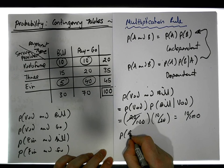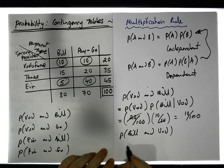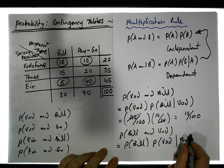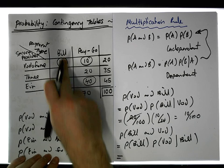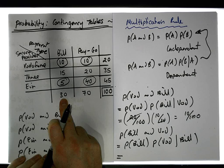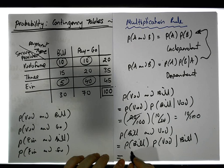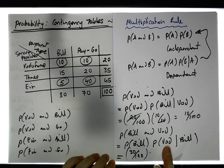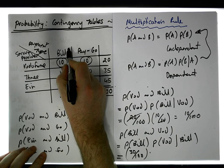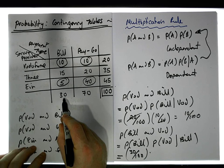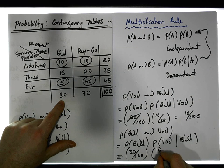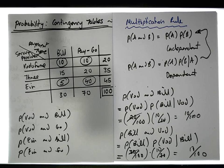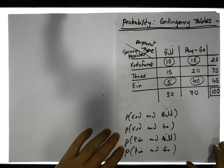Let's also calculate P(bill pay and Vodafone) to verify. That equals P(bill pay) × P(Vodafone | bill pay). The marginal probability of bill pay is 30/100. Knowing they're bill pay, we look at that column of 30 people — 10 are Vodafone, so P(Vodafone | bill pay) = 10/30. The 30s cancel, giving us 10/100 as expected.